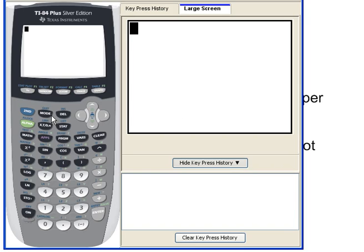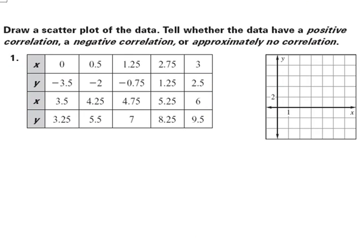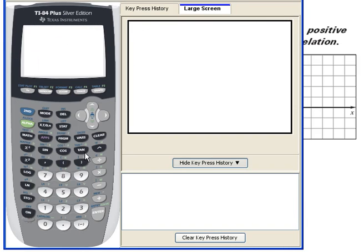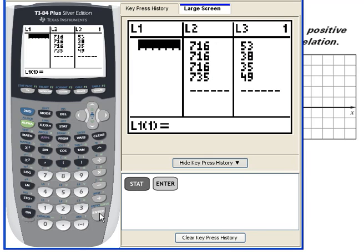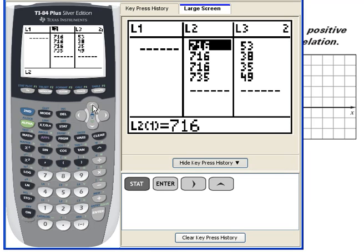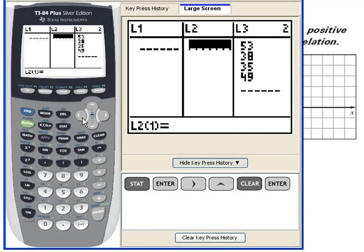I'm going to use the following data from problem 1 on our homework. There it is, and now I'm going to take my calculator, and I'm going to hit stat and enter, and that will put me in the lists. Now, if you have unwanted data, we're going to use L1 for the X's, and L2 for the Y's. If you have data in here you don't want, simply go up to the title of the list, and hit clear, followed by enter. Then I've got them both cleared out.